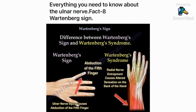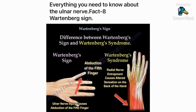Another fact is Wartenberg's sign — abduction of the fifth finger. The dorsal interossei cause abduction, while the palmar interossei cause adduction. In Wartenberg's sign, what is lost is the adduction caused by the palmar interossei, resulting in the fifth finger remaining abducted.